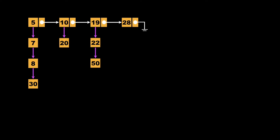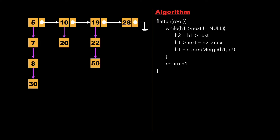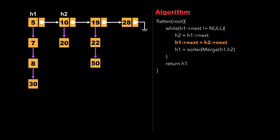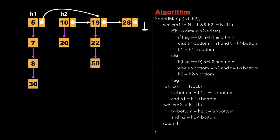We have a linked list consisting of sub linked lists attached to it. The algorithm uses a function called flatten whose argument is the root node. We create two pointers h1 and h2; we point h1 to the root node and check whether h1's next is not null. Since it's true, we assign h2 as h1's next — so h2 points to node 10. We set h1's next to h2's next (so node 5 now points to 19 instead of 10), then call the function sorted_merge with arguments h1 and h2.